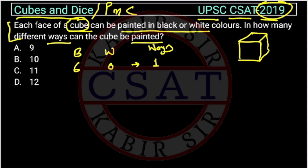Now we will see all the possibilities. Suppose there are five black faces and one white face. Because this is a cube, all faces are the same. So if we paint any one face white, rotating the cube will give the same result. Therefore, there is only one way in this case.